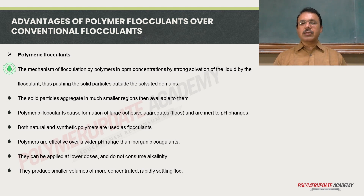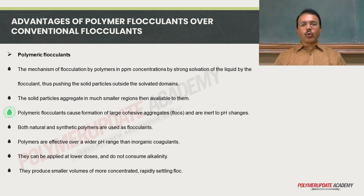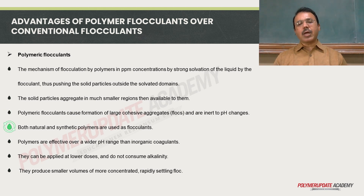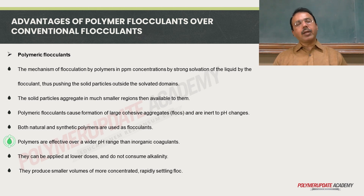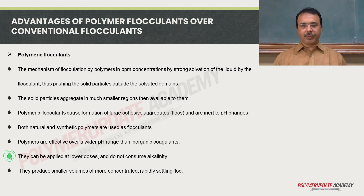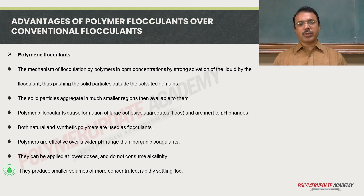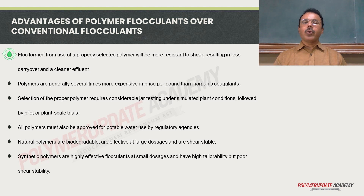This solvation pushes the solid particles outside the solvated domains. The solid particles then aggregate in much smaller regions than otherwise available to them. Polymeric flocculants cause formation of large cohesive aggregates or flocs and are inert to pH changes. Both natural and synthetic polymers are used as flocculants. Polymers are effective over a wider range of pH than inorganic coagulants, can be applied at lower dosage, do not consume the alkalinity of water, and produce smaller volumes of more concentrated, rapidly settling flocs.